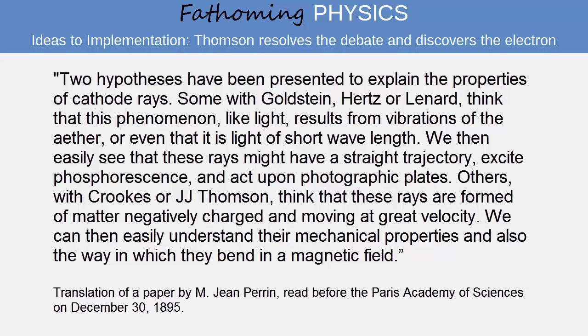Two hypotheses have been presented to explain the properties of cathode rays. Some, with Goldstein, Hertz or Leonard, think that this phenomenon, like a light, results from vibrations of the ether, or even that it is light of a short wavelength. We then easily see that these rays might have a straight trajectory, excite phosphorescence, and act upon photographic plates. Others, with Crookes or J.J. Thompson, think that these rays are formed of matter, negatively charged and moving at great velocity. We can then easily understand the mechanical properties and also the way in which they bend in a magnetic field.